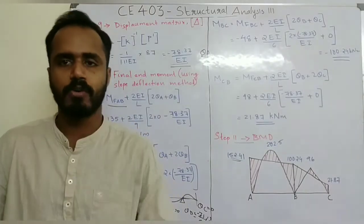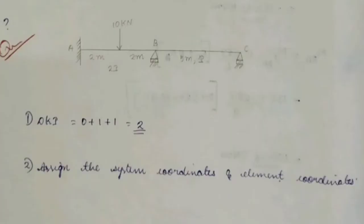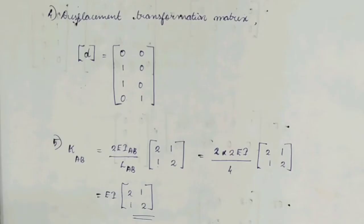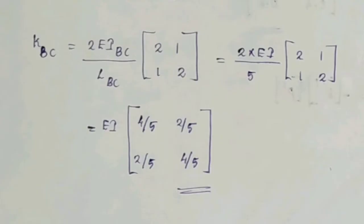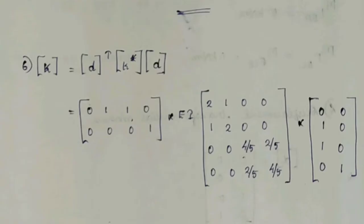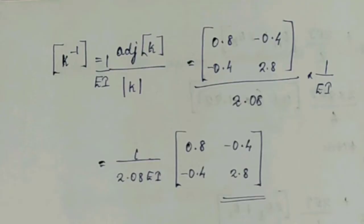This video demonstrated the stiffness method for beam analysis. The procedure covers: calculating kinematic indeterminacy, assigning system and element coordinates, calculating fixed end moments, forming the displacement transformation matrix, computing KAB and KBC, assembling K-star, calculating global stiffness K, and finally computing end moments.